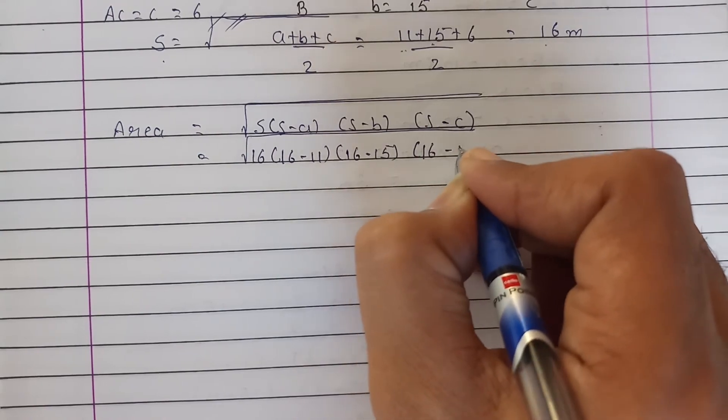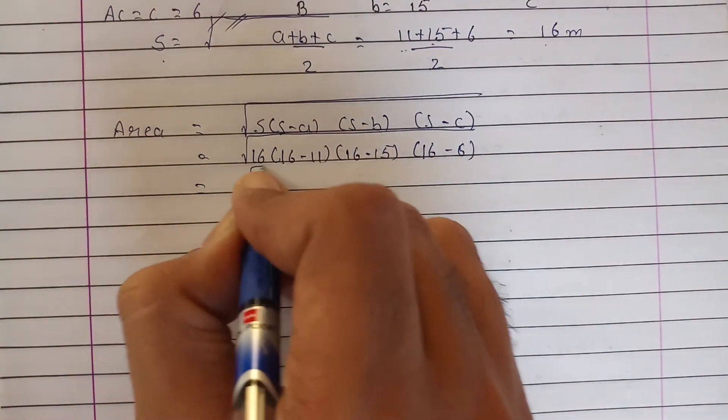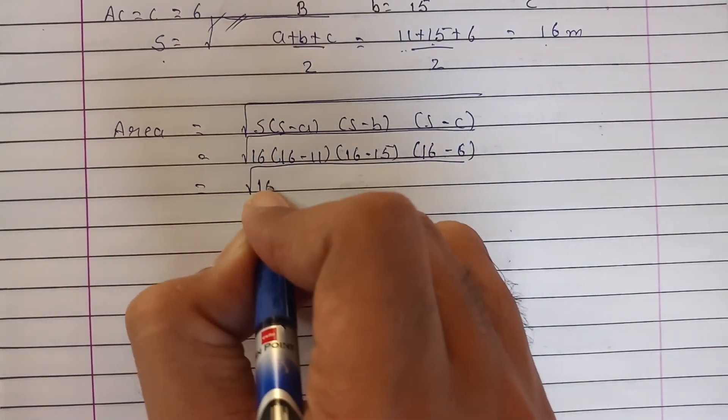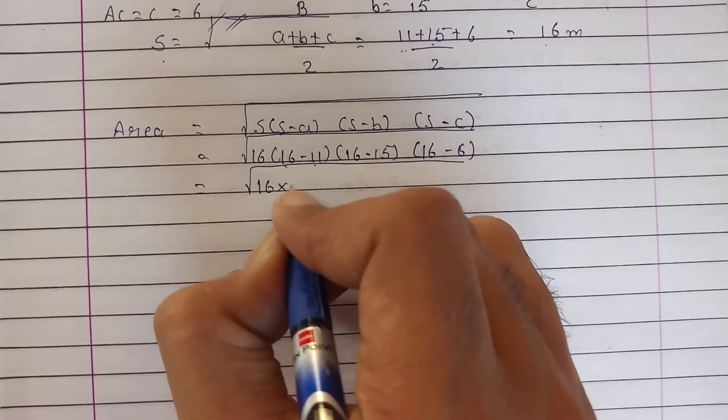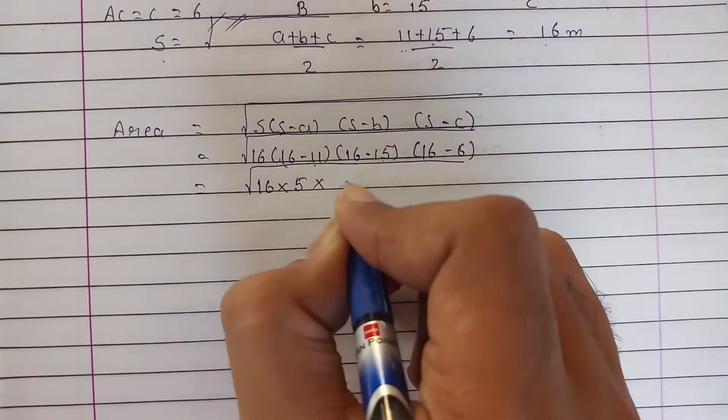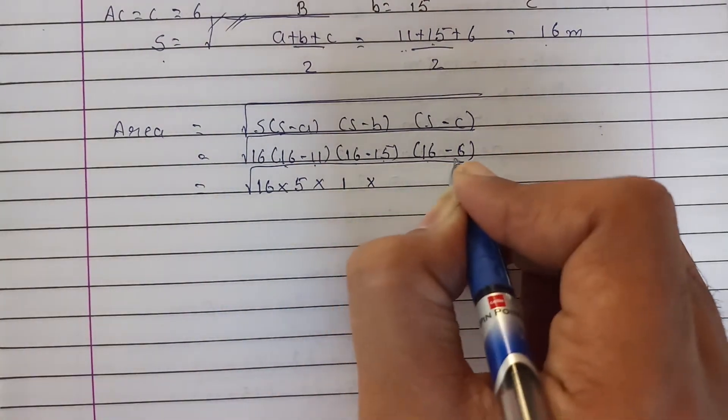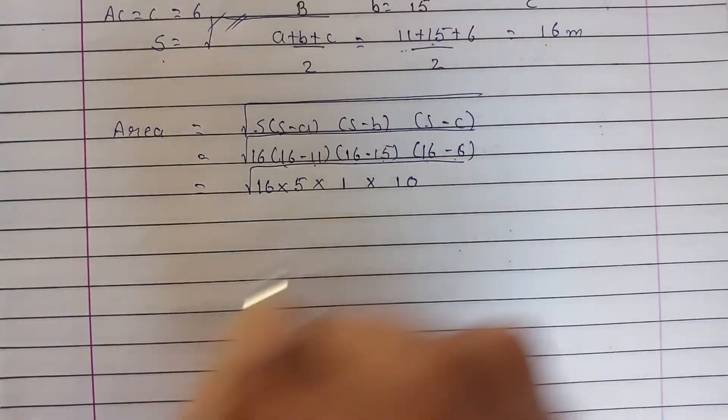s-b is 16-15, and s-c is 16-6. From this, 16 remains as it is, 16-11 = 5, 16-15 = 1, and 16-6 = 10.